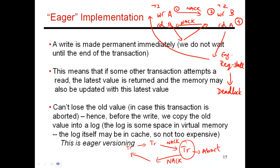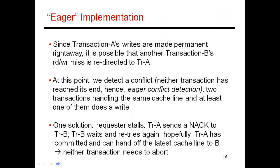If you change the policy from requester stalls to requester wins, you could avoid these deadlocks from happening. But instead, what could happen is a possible livelock situation. If you let the requester win and abort yourself, then both transactions could constantly be aborting and letting the other transaction win and proceed. So there are different policies you could use - in one case you could have a deadlock, in another case you could have a livelock.